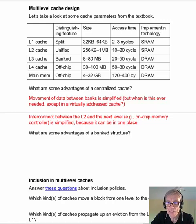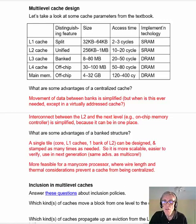Now, what are some advantages of a banked structure? Well, a single tile can be designed and then stamped as many times as needed, so you can have the same kind of subsystem in many places on the chip, and that, of course, makes it easier to reuse across generations. Secondly, it's more feasible for a many-core processor, where you can't centralize the cache because the wire length would be too great. You'd have too much of your chip area devoted to wires. Also, it would heat up certain areas of the chip more than others, and therefore cause a cooling problem.